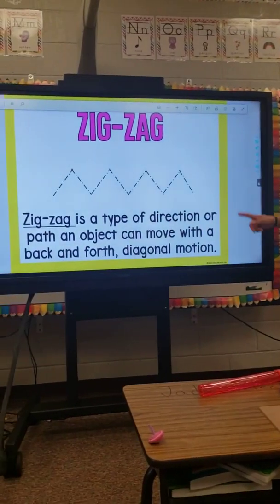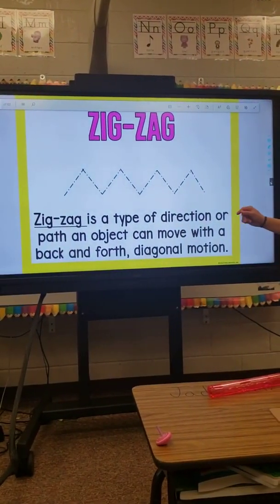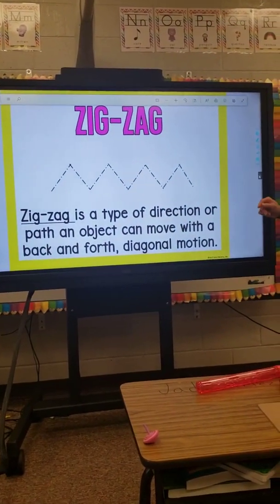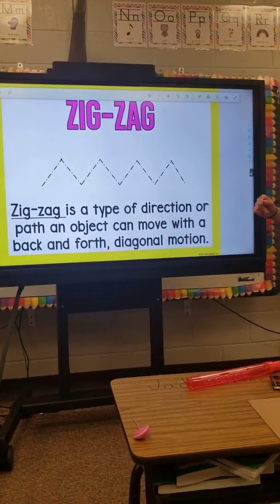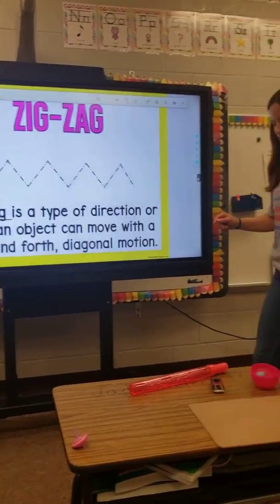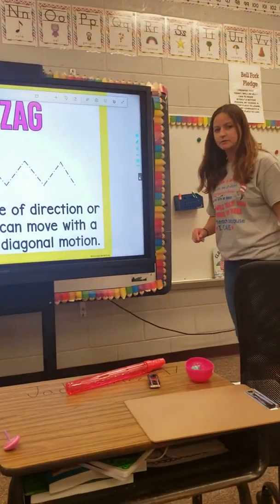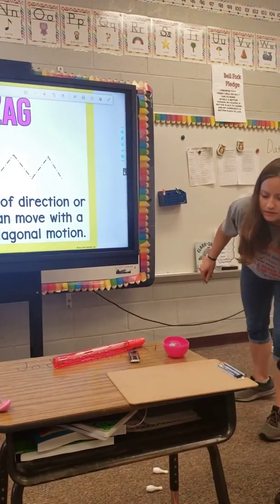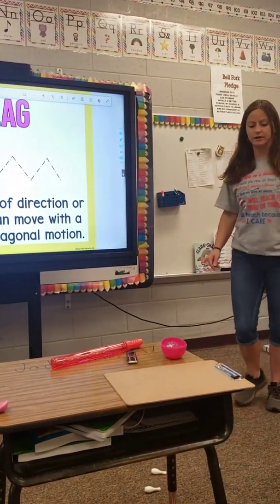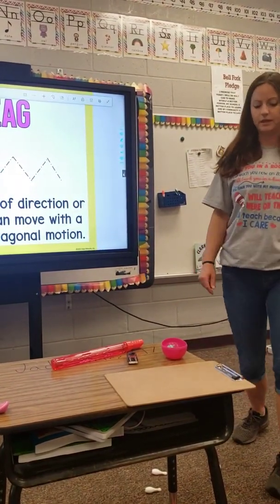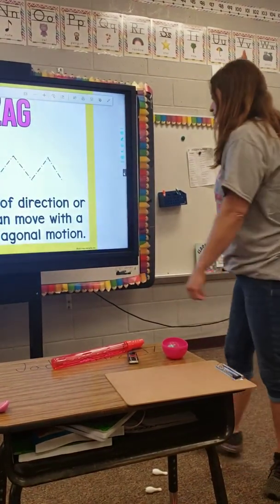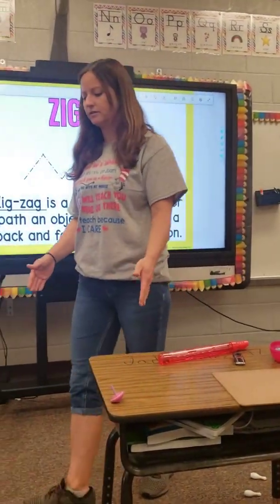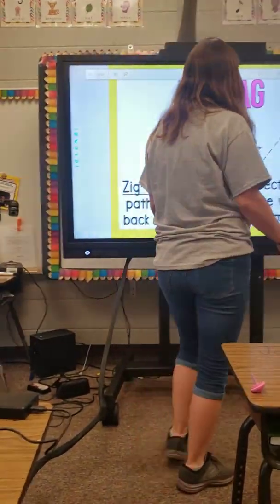Zigzag. Zigzag is a type of direction or path an object can move with a back and forth diagonal motion. So if I was going to walk in a zigzag line, zigzag is going to take me a lot longer to get there than a straight line because I'm going back and forth in different directions.